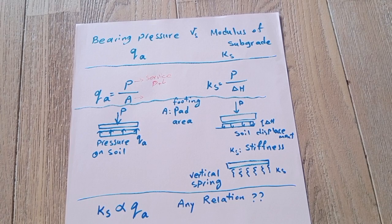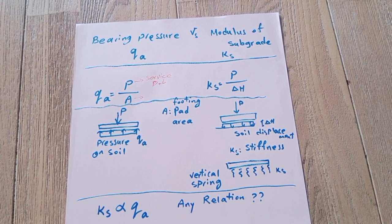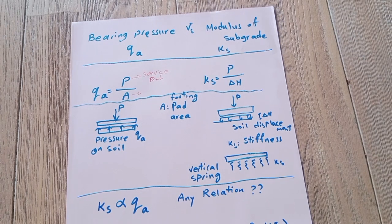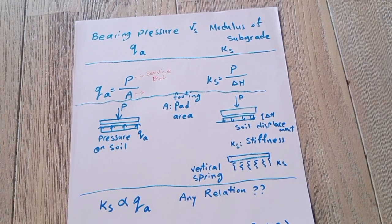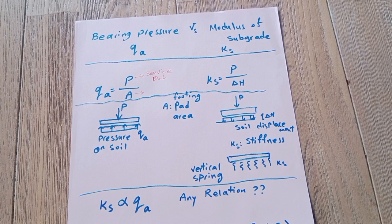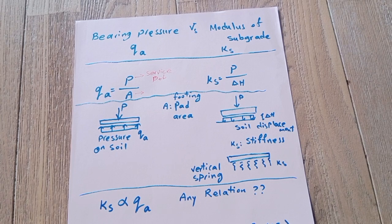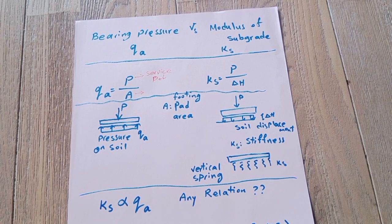Based on definition, one is pressure type and the other is stiffness type. For qa or bearing pressure, we apply the load, which is always service load—in general unfactored load like dead load plus live load or any other type of load—applied on the area of the pad in contact with the soil.